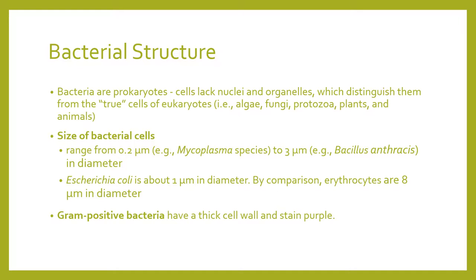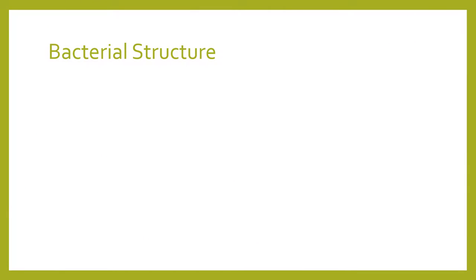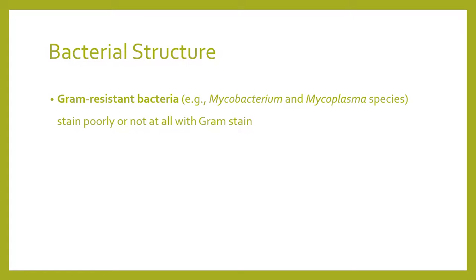It is noteworthy that gram-positive bacteria will always have a thick cell wall and will turn purple. Gram-negative will have a thin cell wall and will stain red. Gram-resistant bacteria, especially those of the mycobacterium and mycoplasma species, will stain poorly or not at all with gram stain — those are your gram-resistant bacteria, your mycobacterium and your mycoplasma.